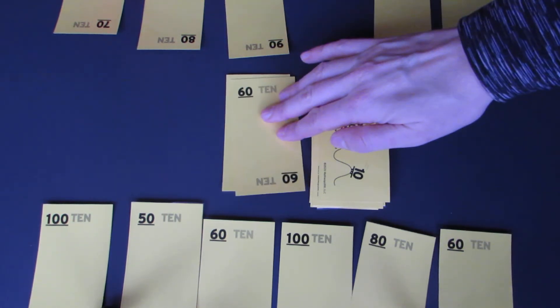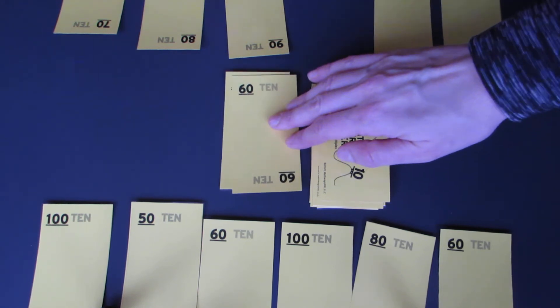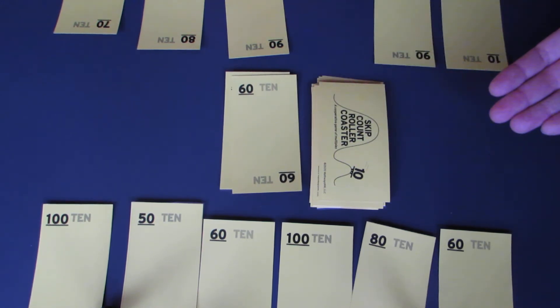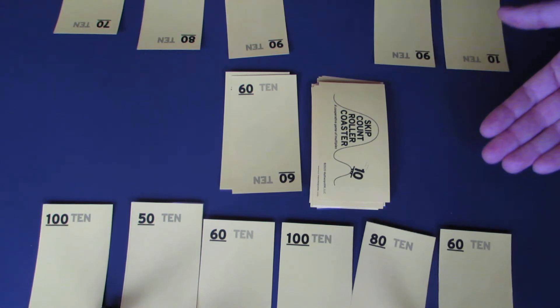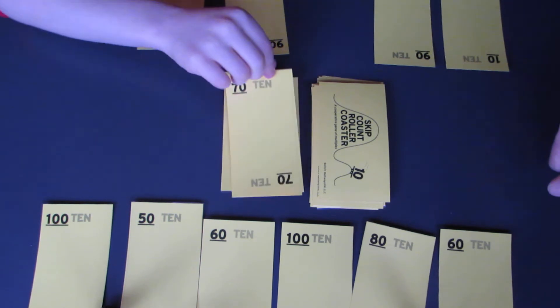Now we could play the next 10 up, which is 70, or the next 10 down, which is 50. Do we have a 70 or a 50? 70. We have a 70. Oh, great. Oh, look.